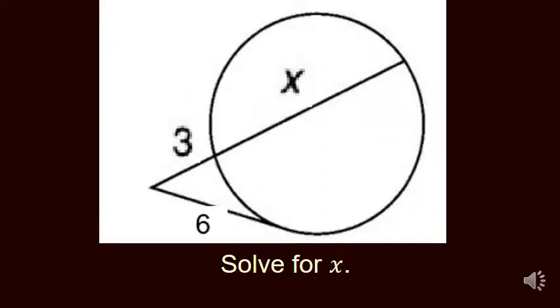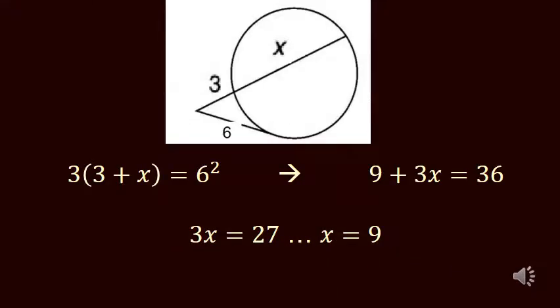One more quick example we'll look at here. This time we've got 3, x, and then the tangent is 6. Again, on the secant part, I do outside times whole, 3 times 3 plus x. That's going to equal 6 squared. So 9 plus 3x equals 36. You subtract and then divide, and it turns out that x must be 9.